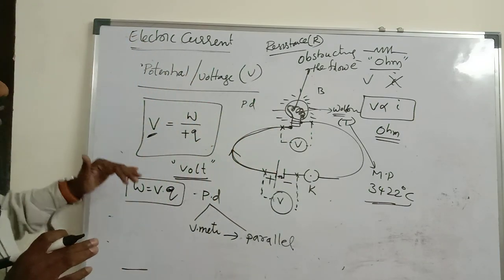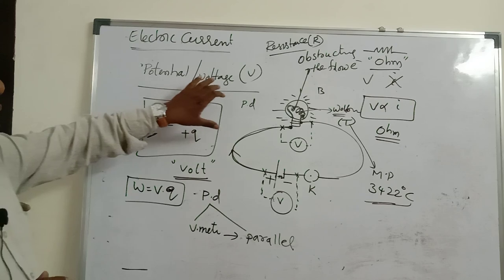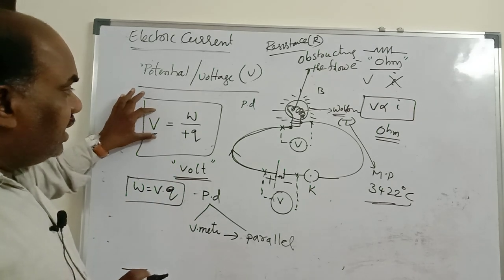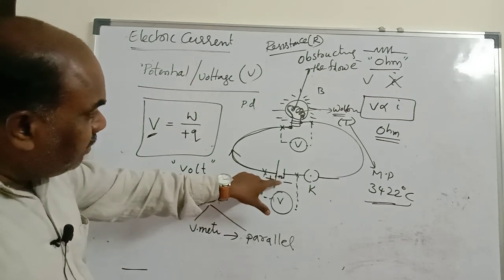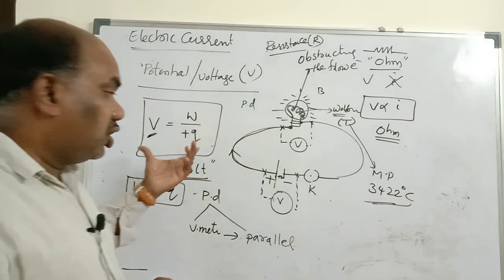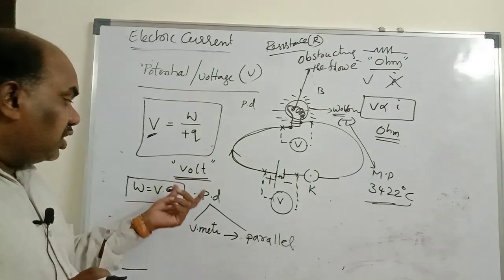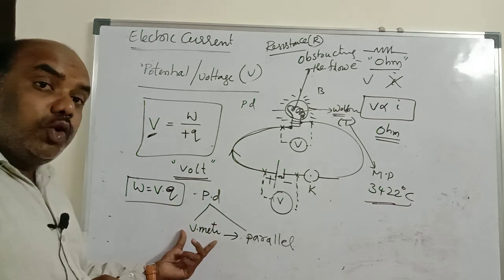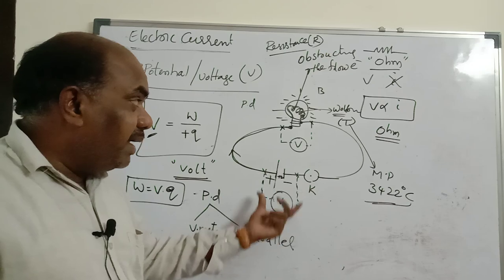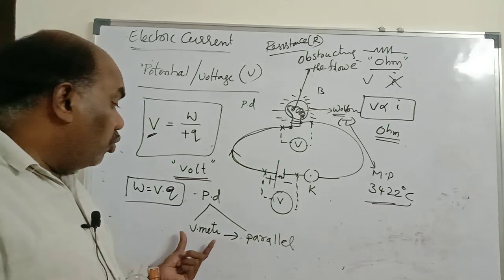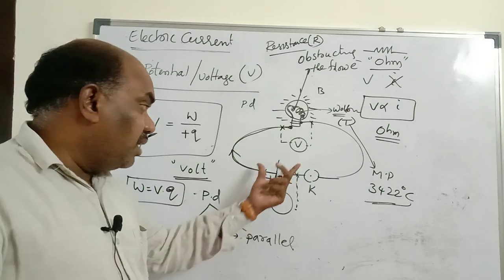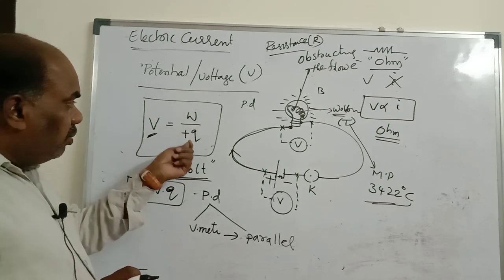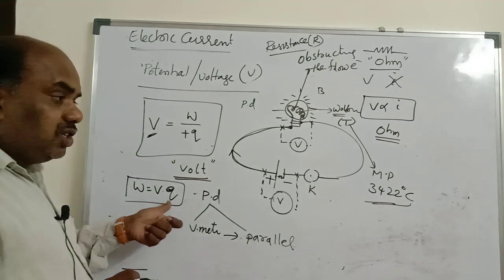Resistance is denoted by R. The symbol of resistance looks like a saw blade. The SI unit of resistance is ohm, because the term resistance and its definition were given by the scientist Ohm. Revision: potential, also called voltage, denoted by V — we cannot measure potential directly, only potential difference. Potential is the work done by the cell to bring one unit positive charge from infinity to the consumer. Unit of potential is volt.